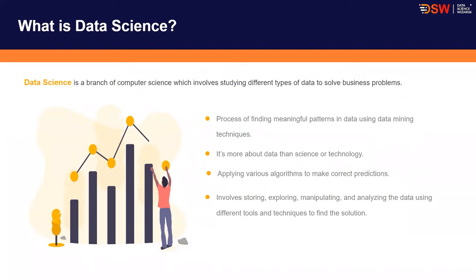In very simple terms, data science involves the storing of data, then exploring that data, manipulating and transforming that data, and at the end analyzing the data using different tools, techniques, algorithms, and technologies to make sure you are able to find some meaningful pattern out of that data.